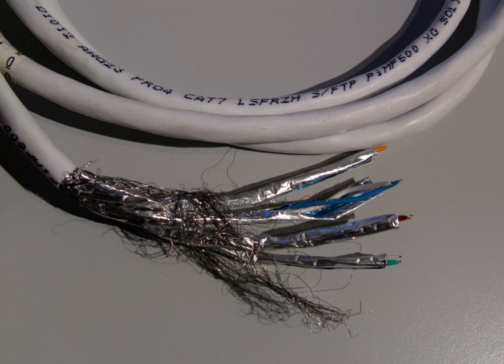Class A link channel up to 100 kHz using category 1 cable and connectors. Class B link channel up to 1 MHz using category 2 cable and connectors. Class C link channel up to 16 MHz using category 3 cable and connectors.